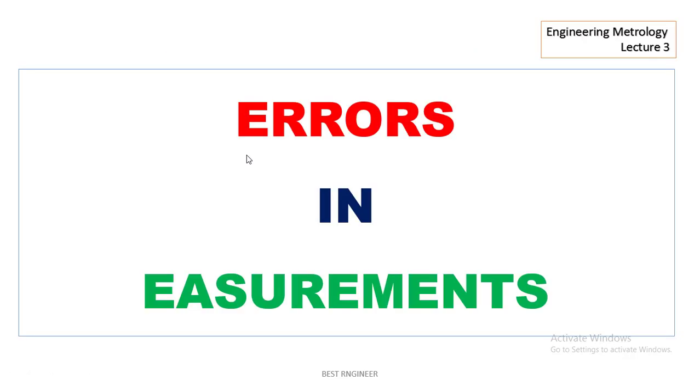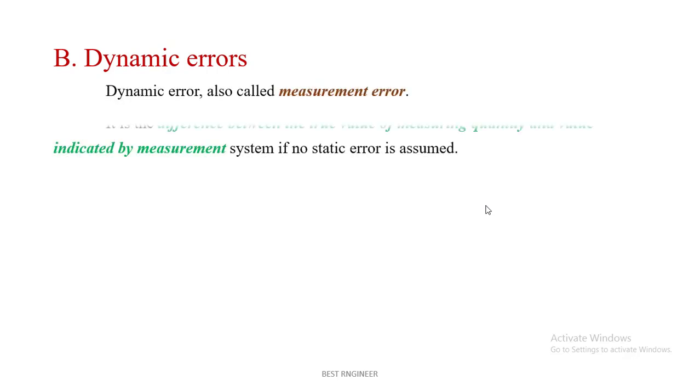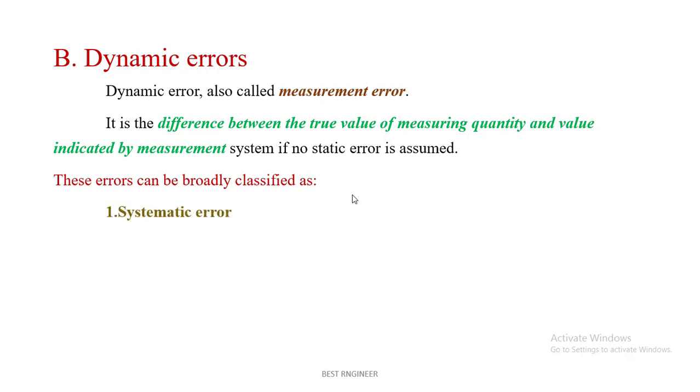In this video let me see the dynamic errors. Dynamic error is also called measurement error. It's the difference between the true value of the measuring quantity and the value indicated by the measurement system if no static error is assumed. This is called dynamic error.